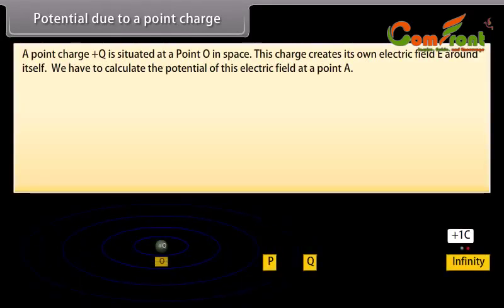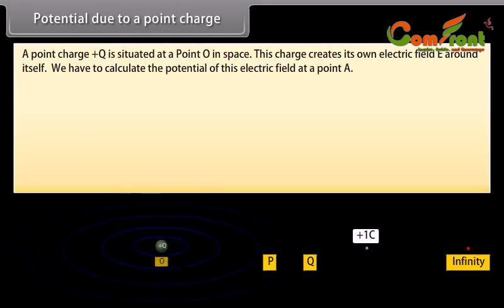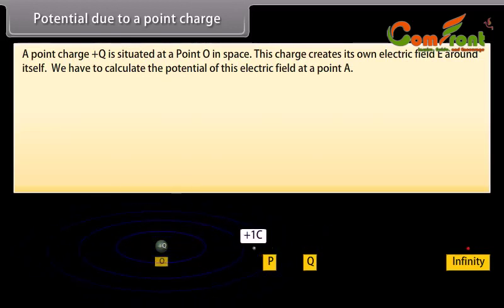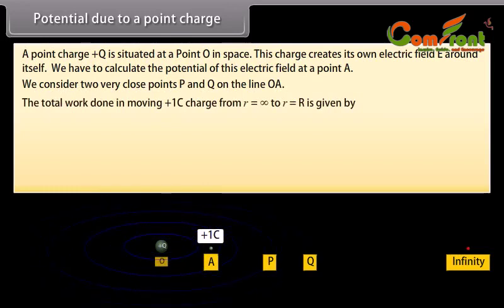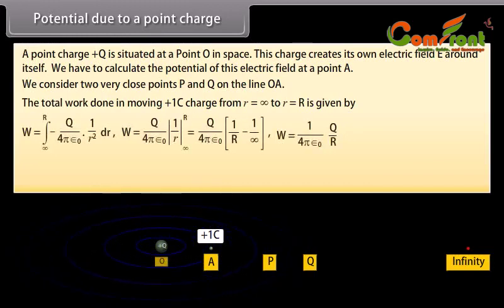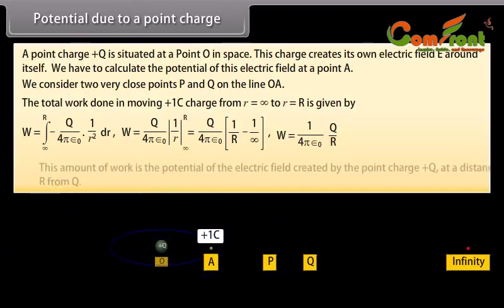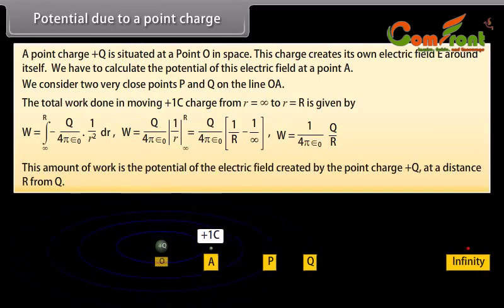Potential due to a point charge. A point charge plus Q is situated at a point O in space. This charge creates its own electric field E around itself. We have to calculate the potential of this electric field at point A. We consider two very close points P and Q on the line OA. The total work done in moving plus one coulomb charge from infinity to point R is given by W equals 1 upon 4π ε₀ multiplied by Q upon R. This amount of work is the potential of the electric field created by the point charge plus Q at a distance R from Q.